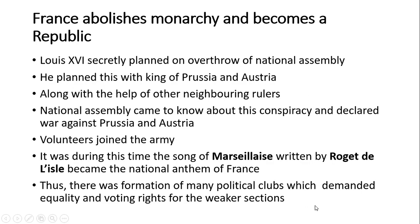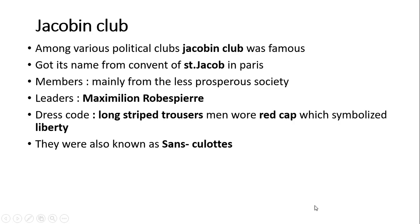There was formation of many political clubs which demanded equality and voting rights for the weaker section — that is, the poor people of the third estate. Among the various political clubs, the Jacobin Club was famous. It got its name from the Convent of Saint Jacob in Paris. Its members were mainly from the less prosperous society. The leader of the Jacobin Club was Maximilien Robespierre. Their dress code was long striped trousers, and men wore a red cap which symbolized liberty.